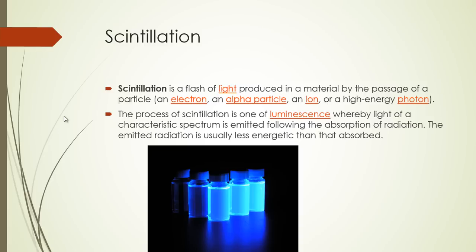Scintillation is basically a flash of light produced in a material by the passage of a particle such as an electron, an alpha particle, an ion, or a high energy photon. The process of scintillation is one of luminescence, whereby light of a characteristic spectrum is emitted following the absorption of radiation, and the emitted radiation is usually less energetic than that absorbed.